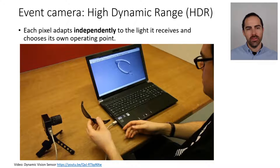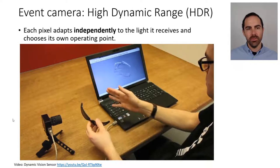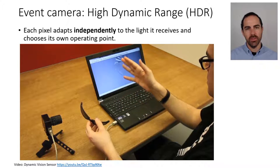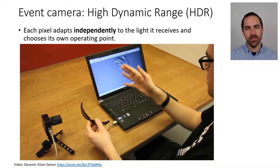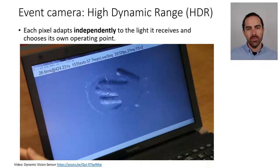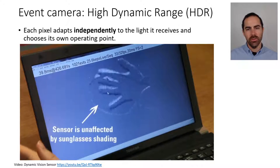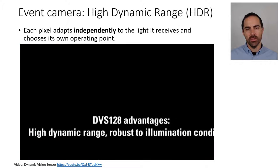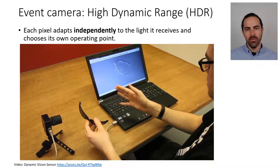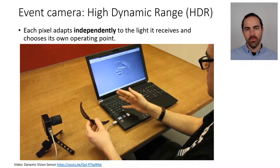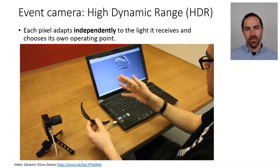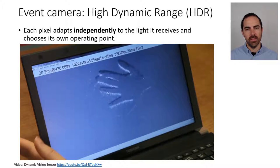This is a more formal example. Remember each pixel works independently from the other pixels and so adapts to the light that it receives and chooses its own set point. So here we are waving the hand behind the sunglasses and we're still able to see quite well. The output of the sensor is almost unaffected by the sunglasses.